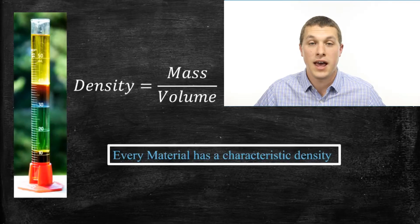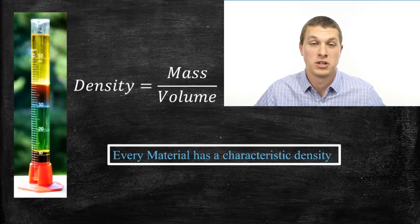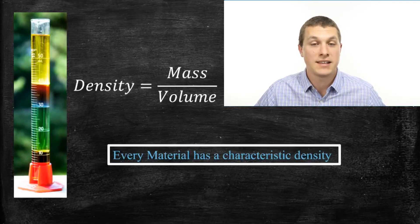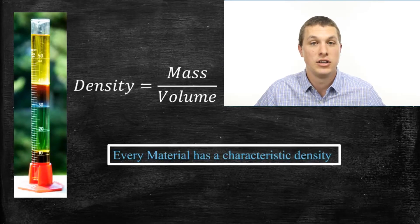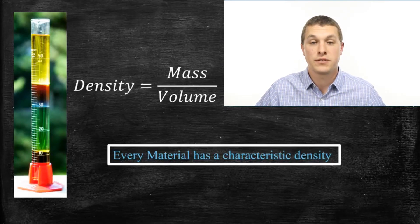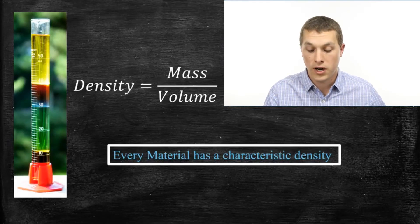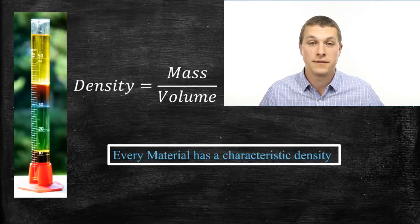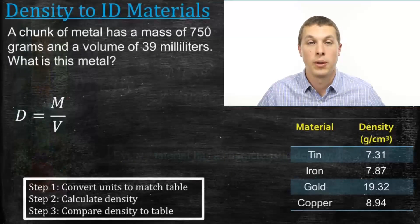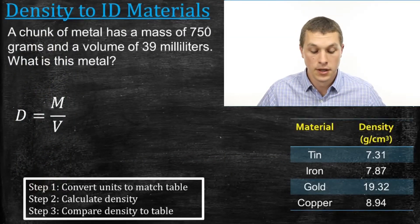That's because every single material has a characteristic density. That is to say, lead always has a certain density, regardless of when you measure it. So if you measure the mass and volume of an object and calculate its density, you can tell if it's made out of lead or not. That's the first type of calculation we're going to do — identifying a material based on its density.